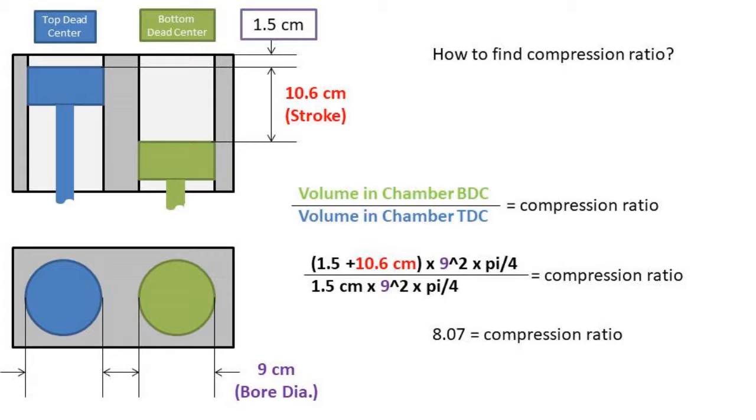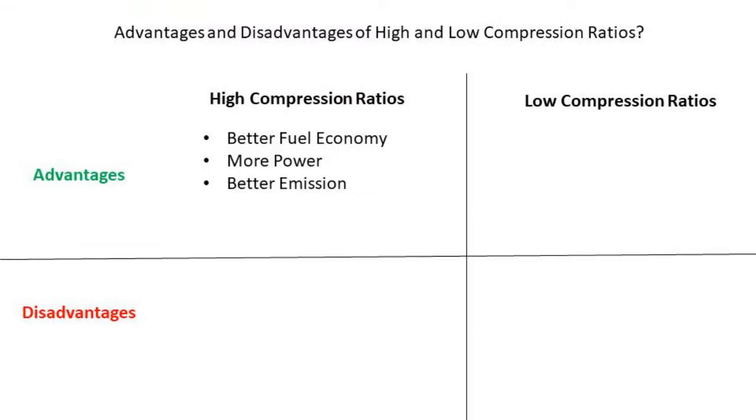This means that the volume at the bottom dead center is 8.07 times larger than the volume at top dead center. Now you are probably wondering, what is the importance of compression ratios? I have put together a simple matrix of advantages and disadvantages for high and low compression ratios.